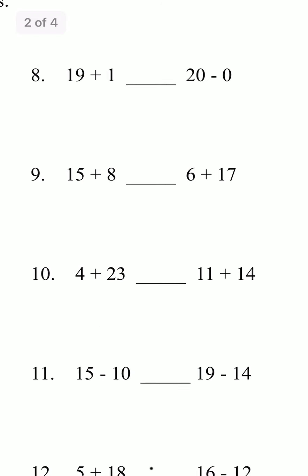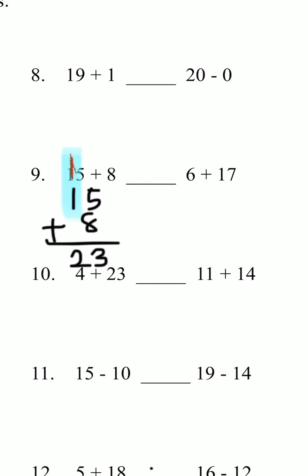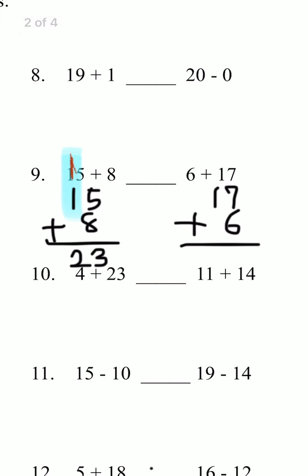Now we're going to do number 9. We have 15 plus 8 and 6 plus 17. 15 plus 8 — 5 plus 8 is 13, and the 1 goes up. Then 1 plus 1 is 2, so that gives us 23. And for 6 plus 17, we write 17 plus 6. 7 plus 6 is 13, write the 3 and carry the 1. Then 1 plus 1 is 2, so that would also be 23. So we would put equal to.